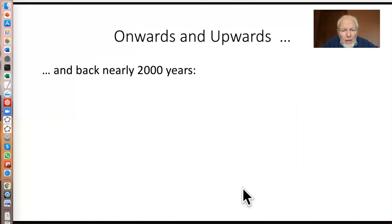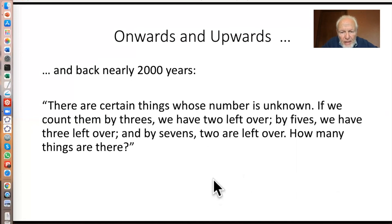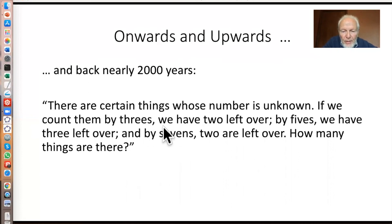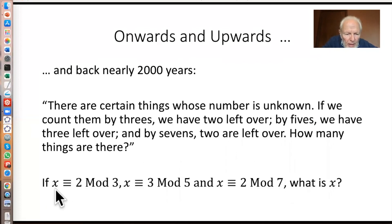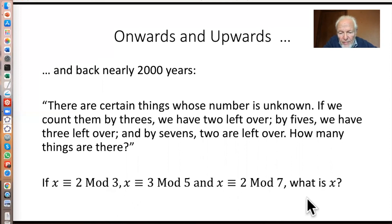We haven't quite got to the full Chinese remainder theorem yet — we need to generalize a little. We're going back nearly 2000 years to the first statement. Here is the original Chinese remainder theorem — it isn't in Chinese now, though it was originally. It's also not a theorem — it's a question. We assume the author knew the theorem, but that's why it's called the Chinese remainder theorem. In modern terms: x is 2 mod 3, 3 mod 5, and 2 mod 7. But if x is any answer to this problem, then so is x plus 105 — in fact x plus any multiple of 105, since 3 × 5 × 7 = 105. So the problem is oddly stated as a unique answer when really there are infinitely many.